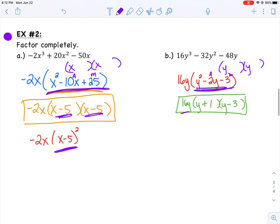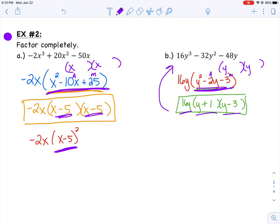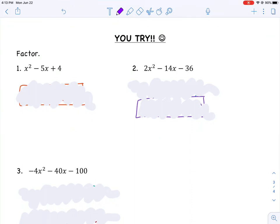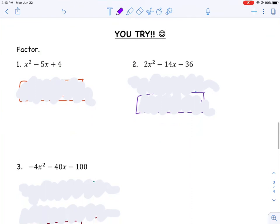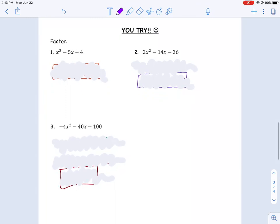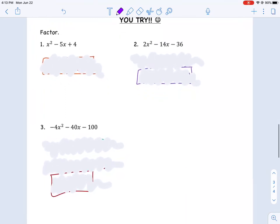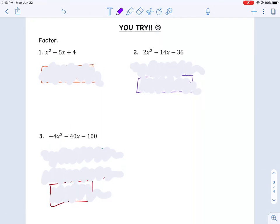So I have my GCF out in front, the 16y, and then I have my two other factors that together multiply to give me my original polynomial. So this one has three different factors: 16y and then y plus 1 and y minus 3. Make sure that you factor all the way down. All right, now that we've talked about GCF, grouping, and basic factoring, I would like you to pause the video and try these three problems. This is a really good way to make sure that you're understanding before we move on. Pause the video and then come back and check your answers with mine.